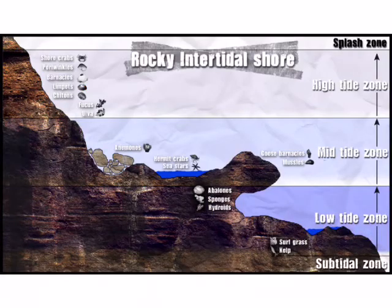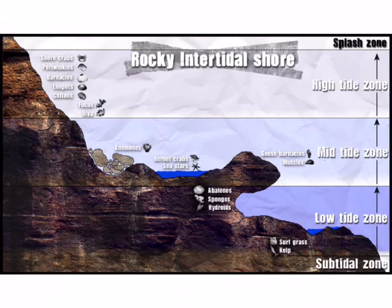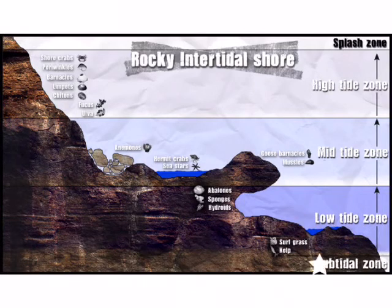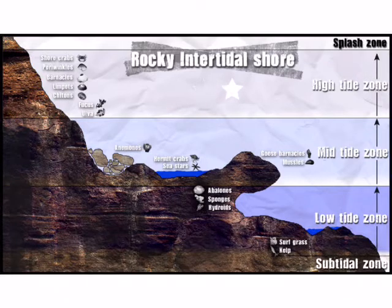Here's a nice diagram that shows what's happening as the tide is changing. Things that live in the high tide zone are able to spend more time out of the water, and things in the low tide zone are going to spend more time under the water. Everything in the intertidal zone is getting sunlight, so plants are able to grow in all areas of the intertidal zone.